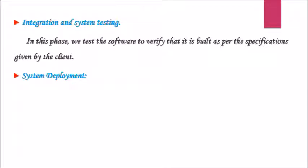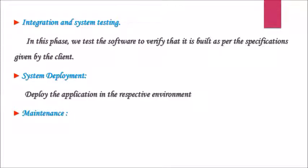Next phase is system deployment. In this phase, we deploy the application in respective environment. Next final phase is maintenance. The system is delivered, deployed and put into practical use. Maintenance involves correcting errors which were not discovered in earlier stages of the life cycle, improving the implementation of the system units, and providing new functionalities as new requirements emerge.